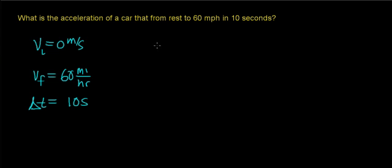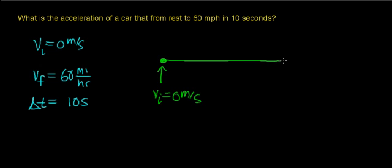Before we actually calculate the acceleration, let's just see what's happening within this problem. If this is our starting point, this will be the point where our car is initially at rest, and that would be 0 meters per second. Then what's going to happen is this car is going to accelerate over some distance, reaching a final velocity of 60 miles per hour over a time interval of 10 seconds.